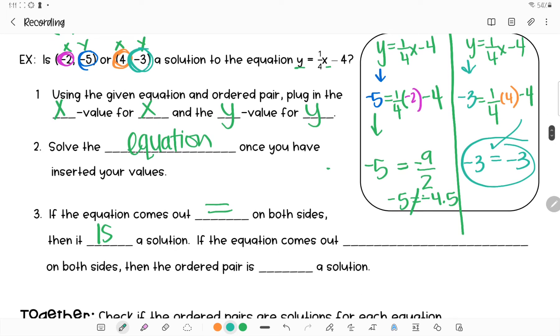If the equation comes out equal on both sides then it is a solution. If the equation comes out different on both sides the ordered pair is not a solution. So this one is, this one's not, and this one is because it was the same on both sides, this one is not because it's different.